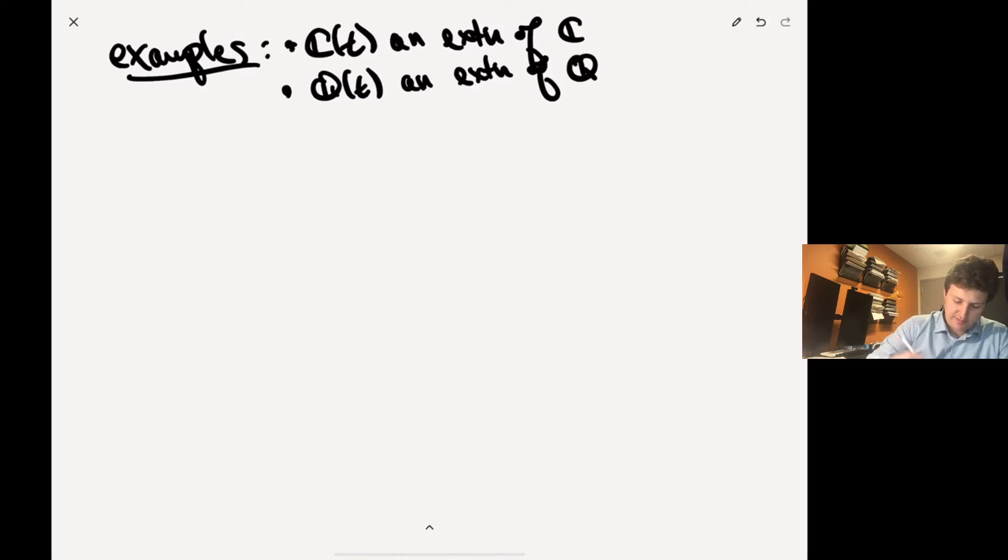We can say Q adjoin i is an extension of Q, and so on. So it's just you take the field and you think of it as kind of adjoining more elements to the field.